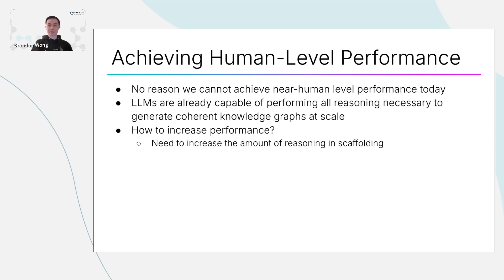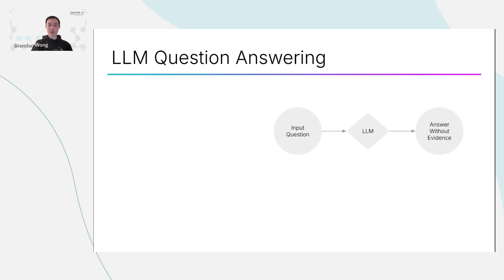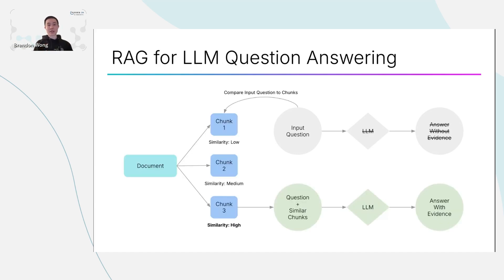I'm going to jump into an example using AI to retrieve knowledge when thinking about how to apply more reasoning into scaffolding. In an unscaffolded example, you ask an LLM a question and it spits out an answer. But the LLM may not have the necessary knowledge, or it may hallucinate the answer to your question, which is not good. One very popular solution is retrieval augmented generation, which fetches information from a knowledge base and feeds that into the LLM prompt along with the question, hopefully generating a more correct answer.